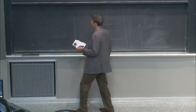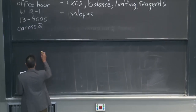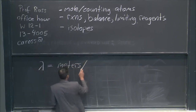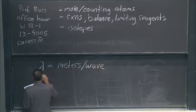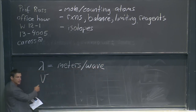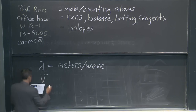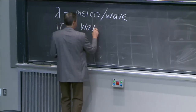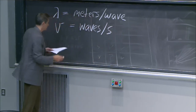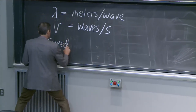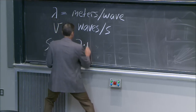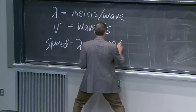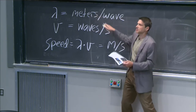If you have a wavelength, that might be in meters — how many meters per wave. If you have the frequency, and I'll use the notation ν — you could use f, I like using ν — that's going to be the number of waves per second. And so the speed is going to be the two of them multiplied together. So it's going to be meters per second if those are the units. I know a lot of you have seen this, but I want to get it up here.